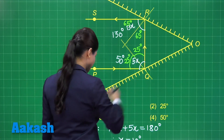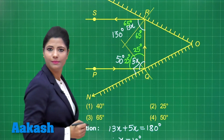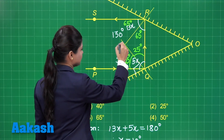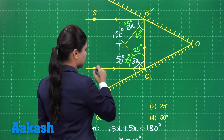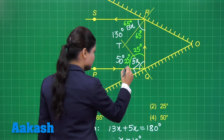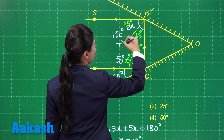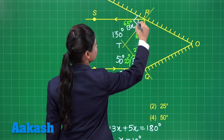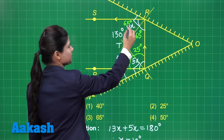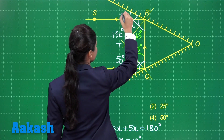This normal makes an angle of 90 degrees with the mirror. If I consider this point to be T, angle PQT is measuring 25 degrees. So 90 minus 25 degrees — this angle will measure 65 degrees. The same follows here. The normal TR is perpendicular to this mirror. Angle TRS is measuring 65 degrees, so the remaining angle SRM will measure 25 degrees.